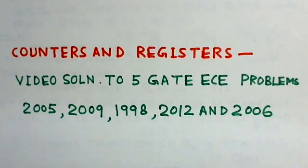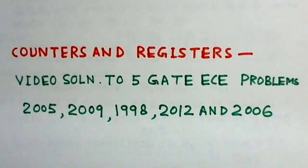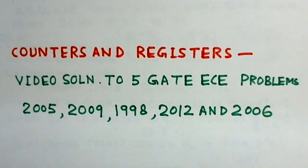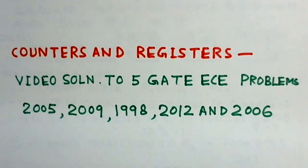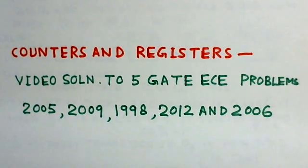In the third problem, two JK flip-flops are connected as a counter and one has to determine the modulus of the counter, making it another variety in the problem set. The fourth problem is from GATE 2012 and is on the state diagram — a logic circuit is given and one has to determine the correct state transition diagram.